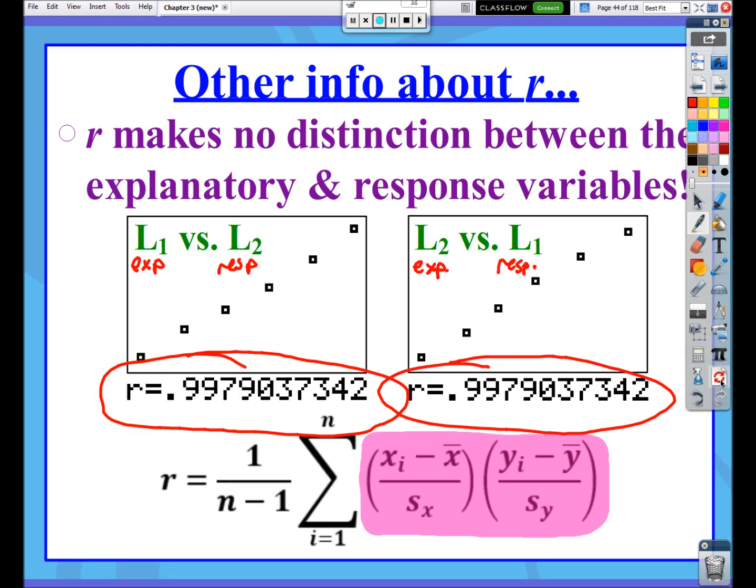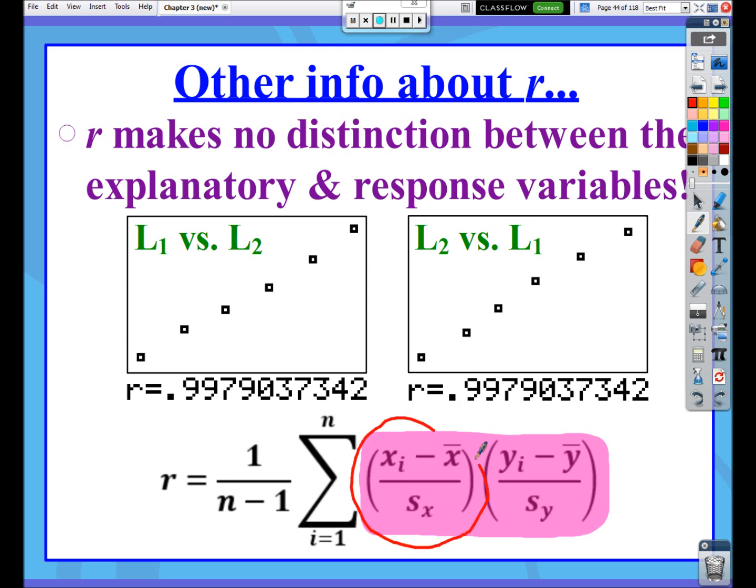Now, why doesn't the correlation change? Well, again, look at the formula here. Here's the explanatory z-scores. Here are the response z-scores. Does it really matter the order that I multiply these z-scores? And the answer is no. Multiplication is commutative. It follows the commutative property. So I could move all these z-scores over here and move these scores over there, and in the end, it really doesn't make any difference.